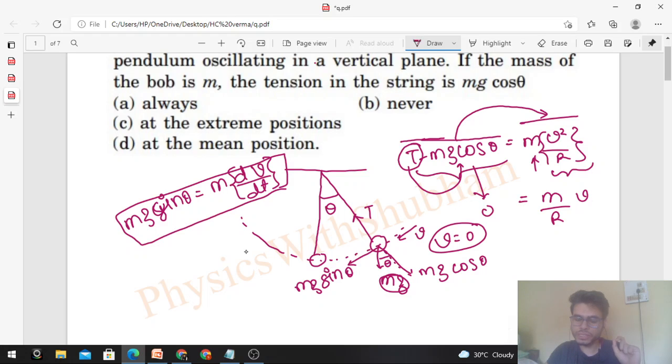When it's at the extreme position, its velocity becomes zero. Further, it again comes downward and its velocity increases because of mg sin θ. You see, when displacement is zero,